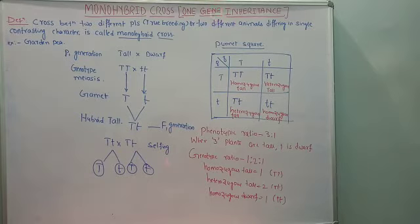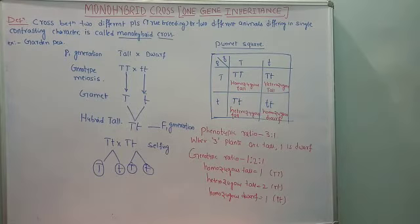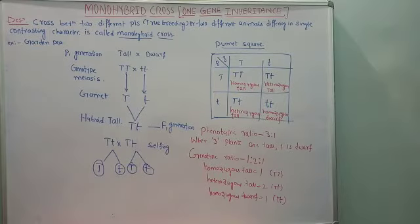Here, one pair of contrasting characters among the 7 contrasting characters was selected by Mendel — that is height. By taking height as an example in the garden pea, he carried out the hybridization and obtained the phenotypic ratio as well as genotypic ratio. He crossed tall and dwarf pea plants to study the inheritance of one gene.